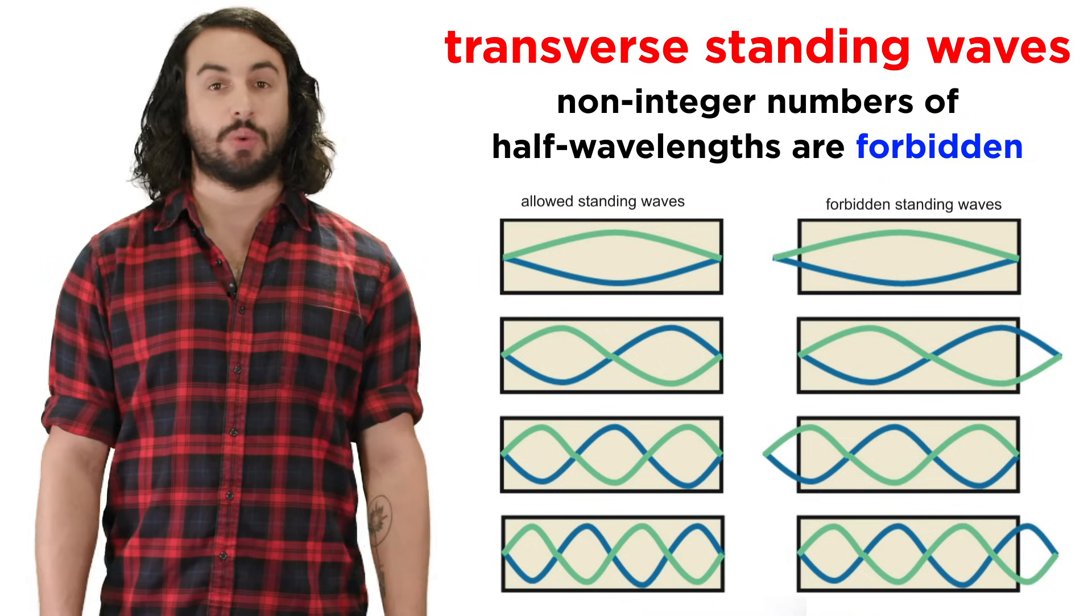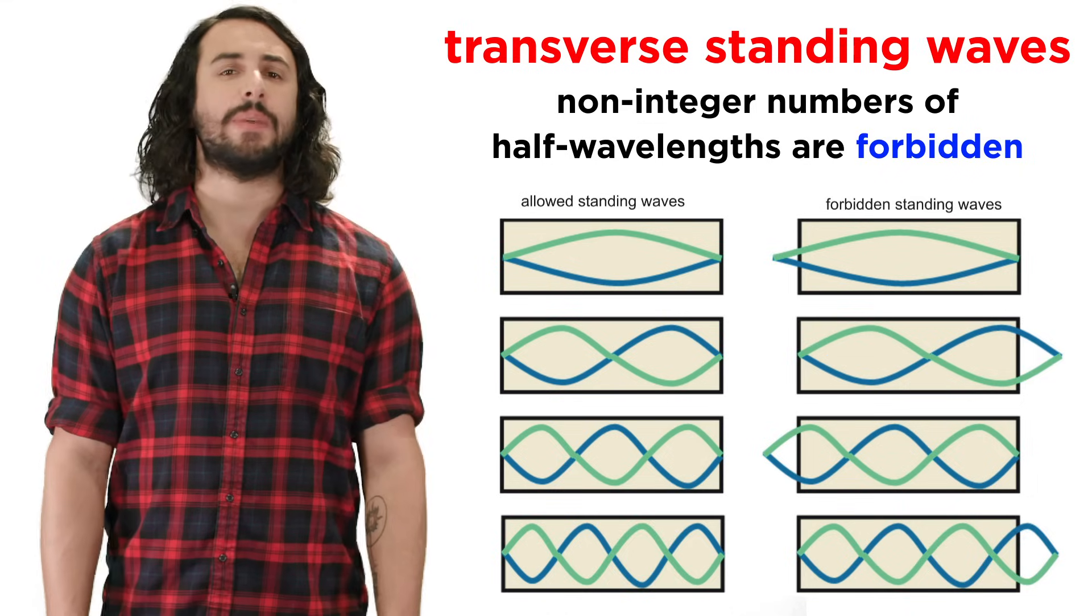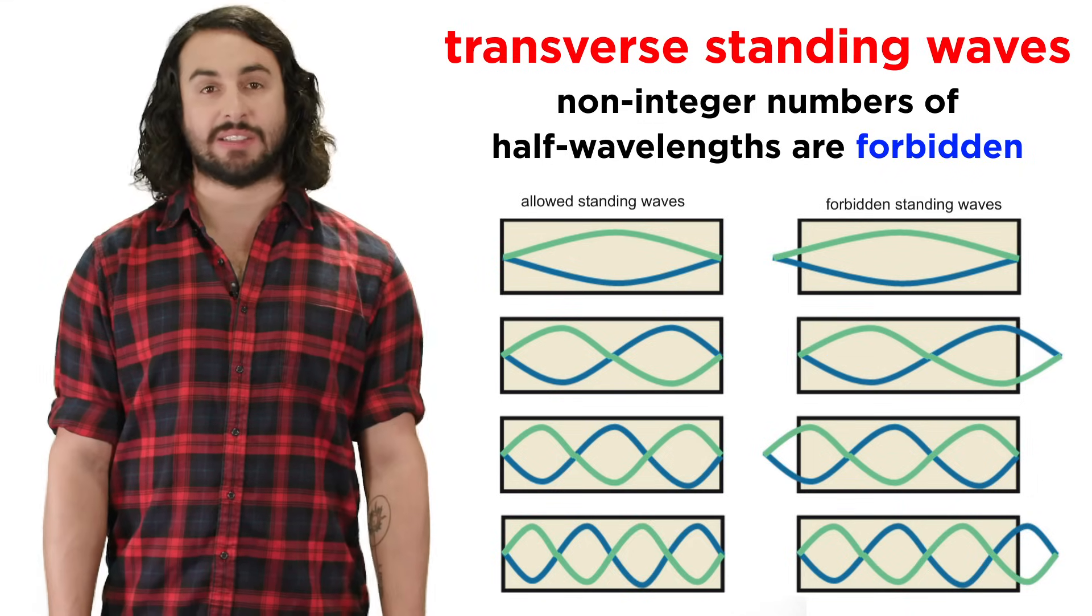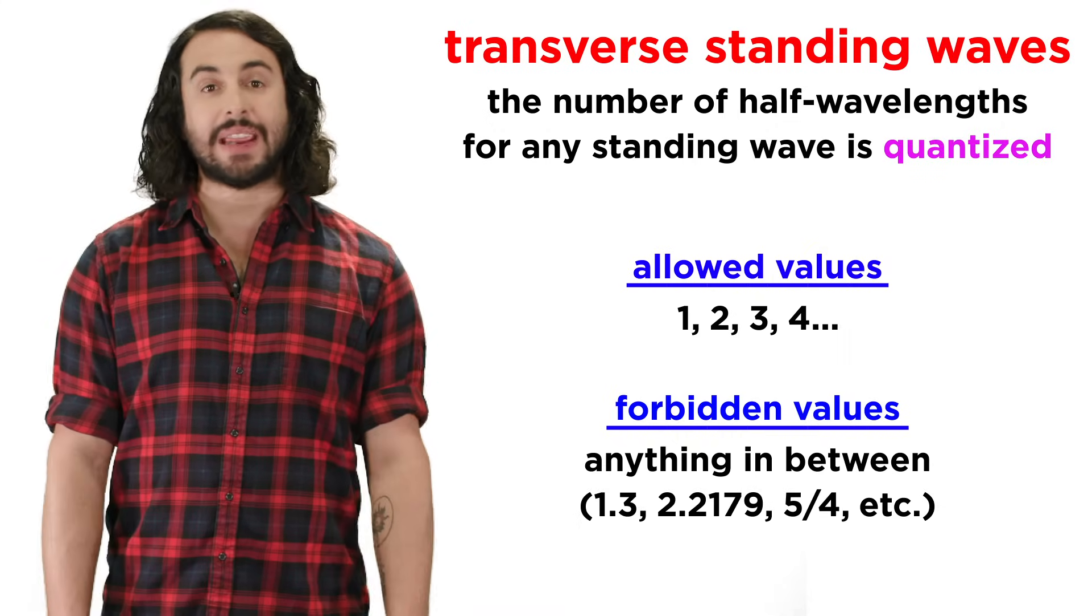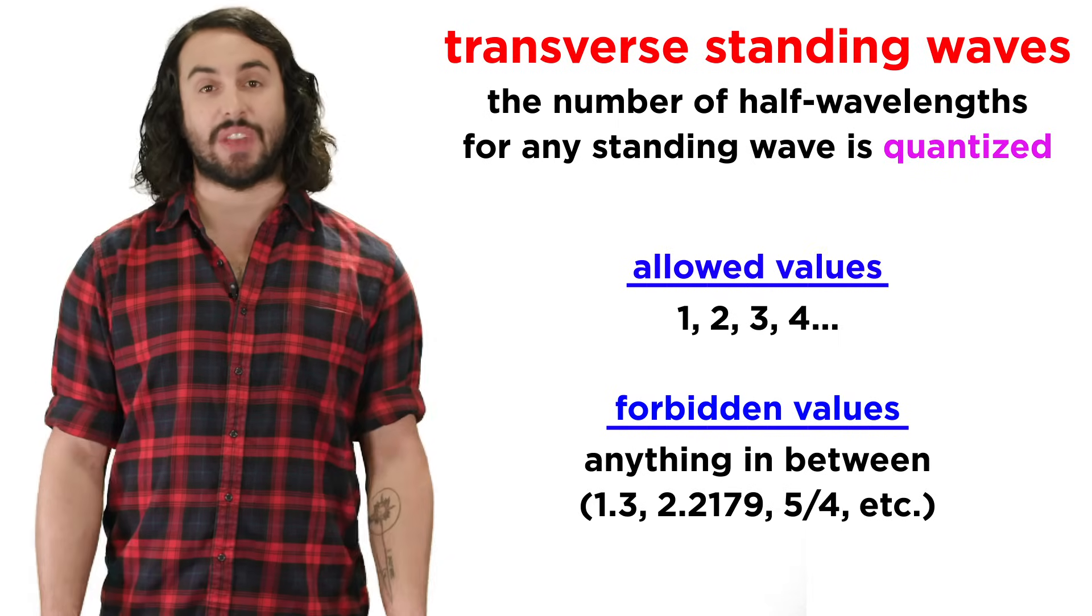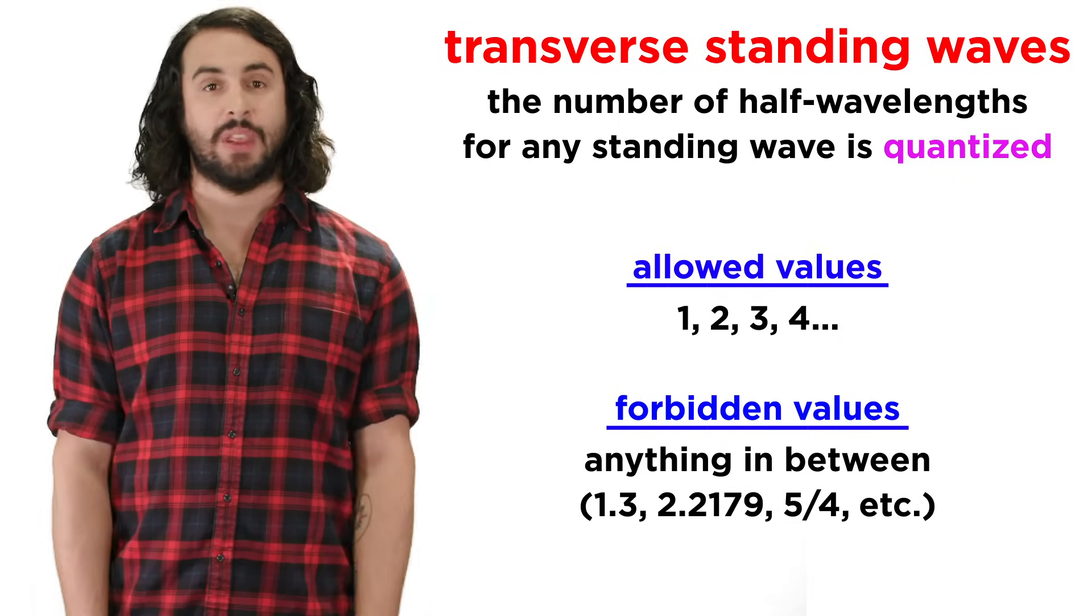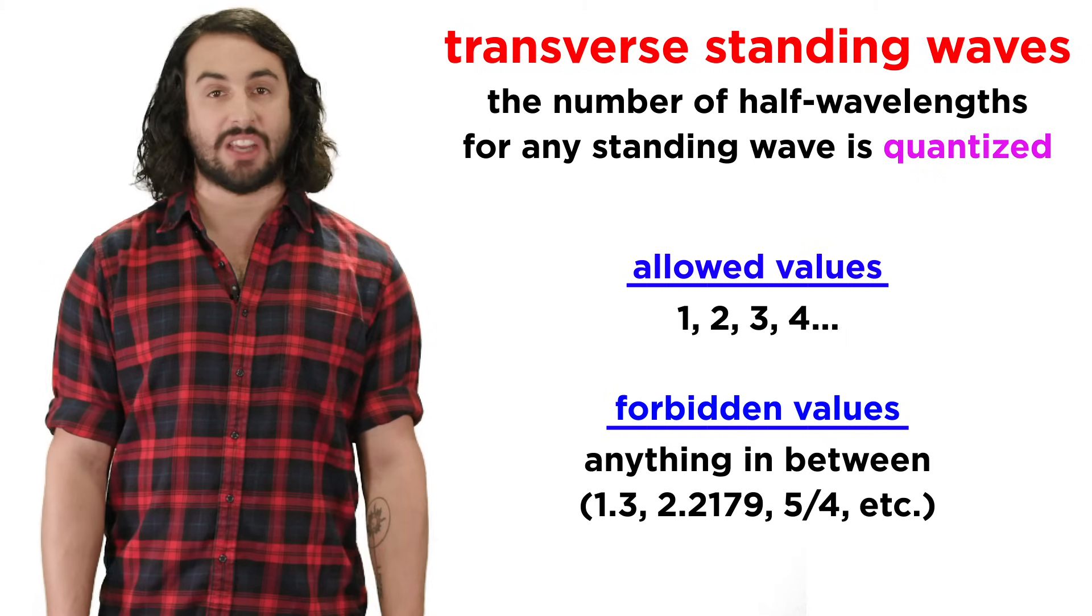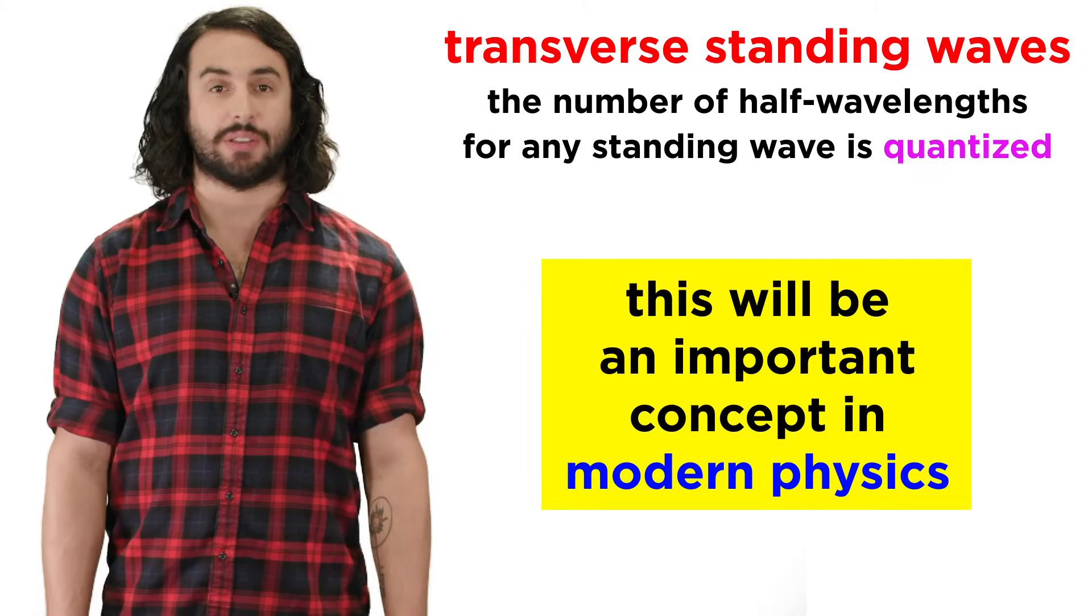If the number of half wavelengths was not an integer, the wave couldn't exist. This means that the number of half wavelengths in any standing wave must be quantized, meaning it can only exhibit certain discrete values, such as the set of integers, rather than any value from a continuous spectrum, and this idea of quantization will be an important one when we get to the modern physics course.